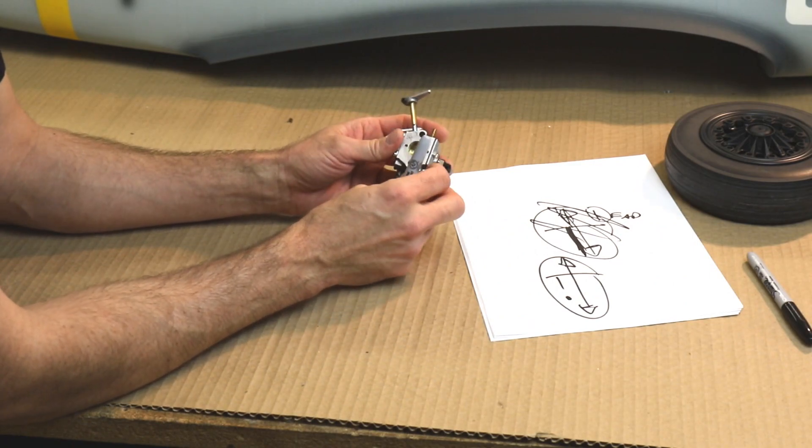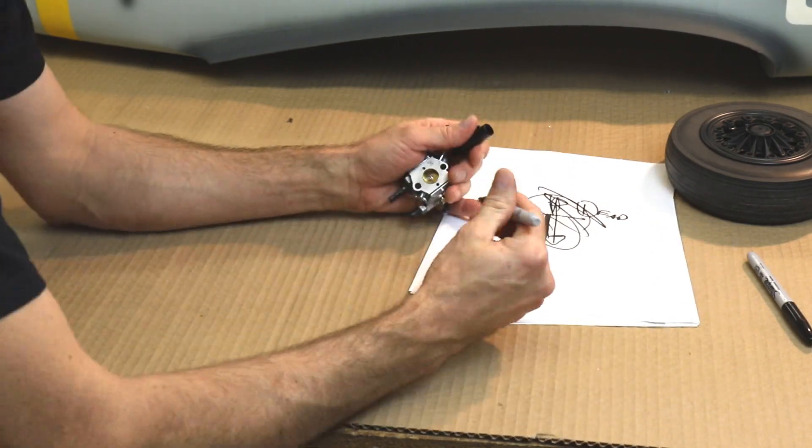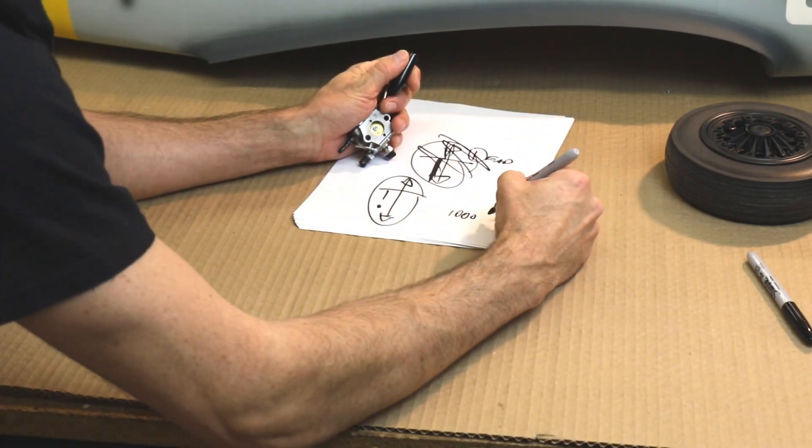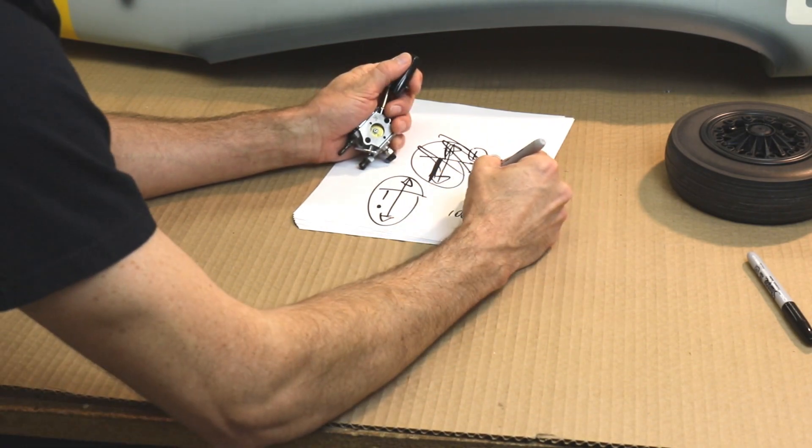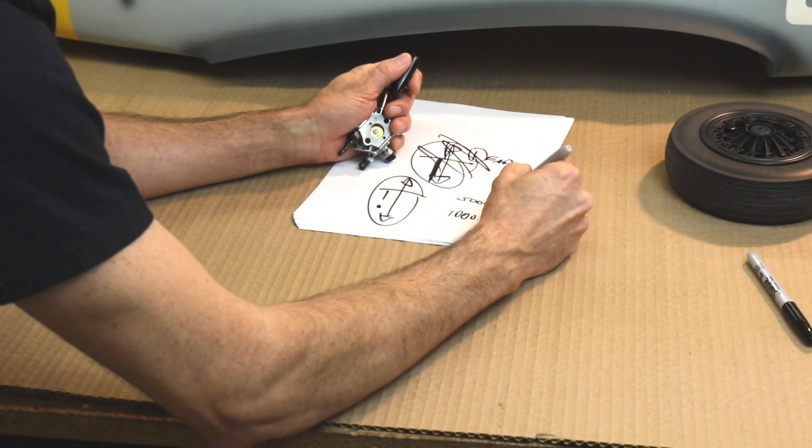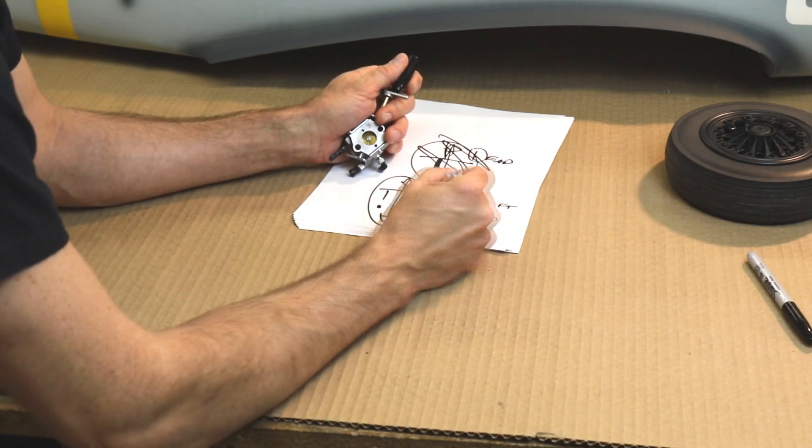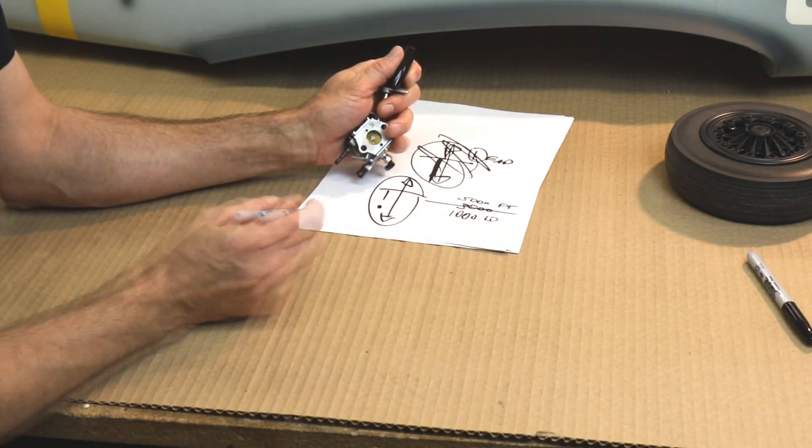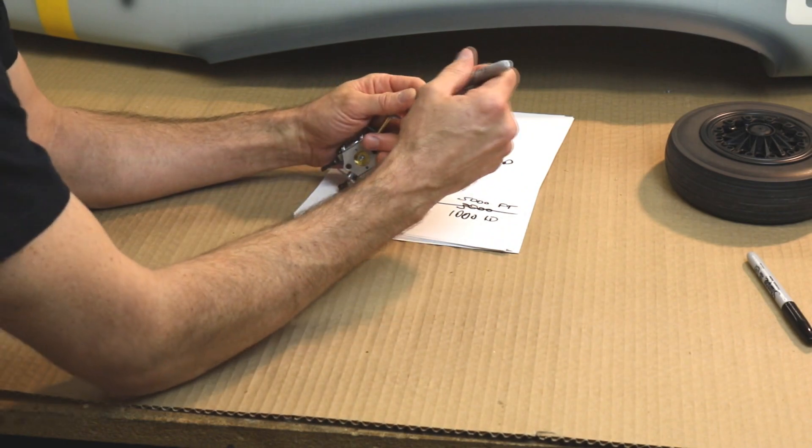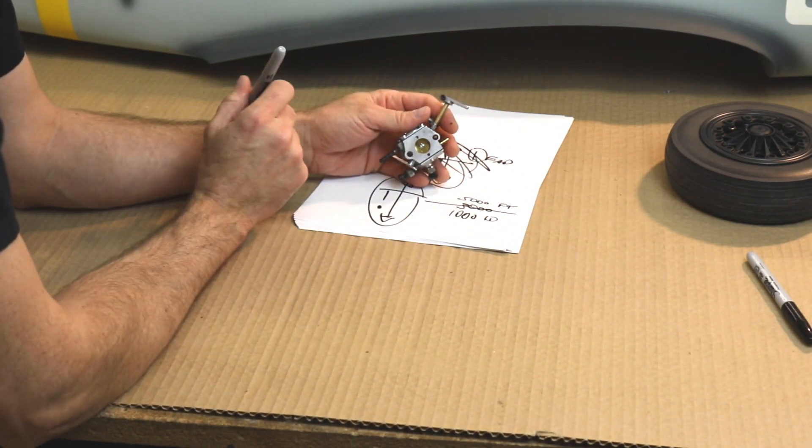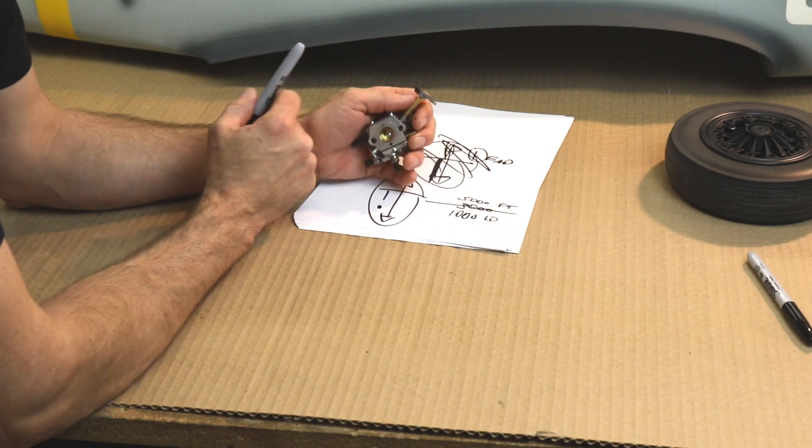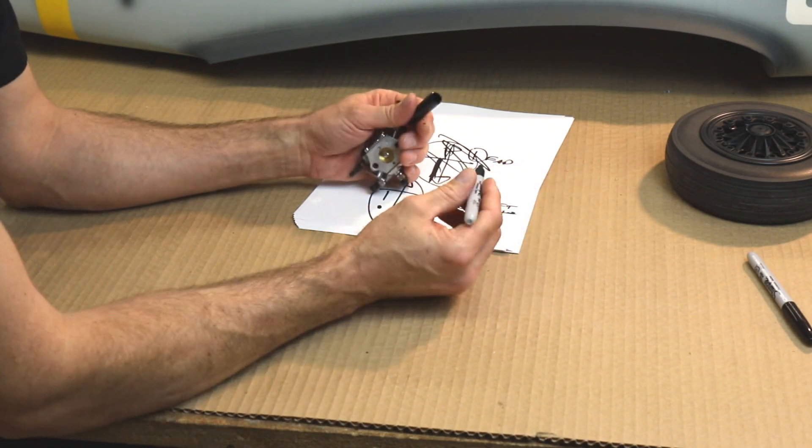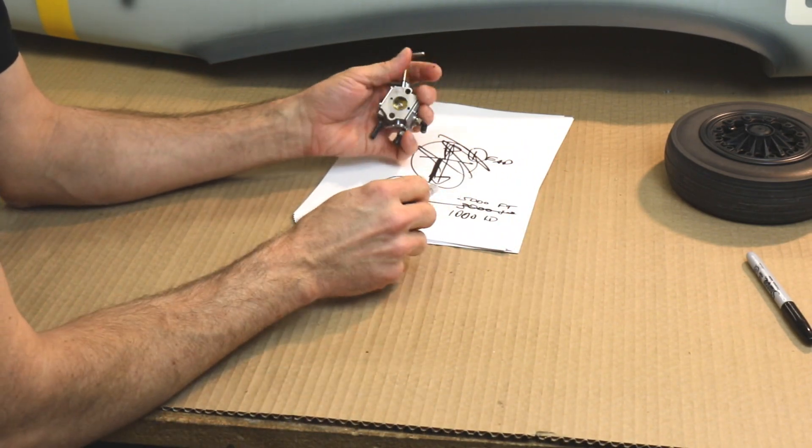And now for the total freaks out there - and there's nothing wrong with it, I love to do it myself - now let's say down here at idle, just for easier math, we say we're at 1,000 idle, and let's say we're at 5,000 at full throttle. So at 50% stick position, I want to be at 3,000 to make it super sweet. So now I can go and adjust my throttle curve if I really want to do that.